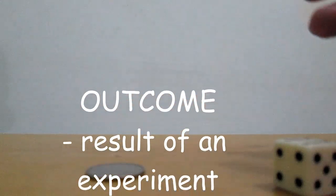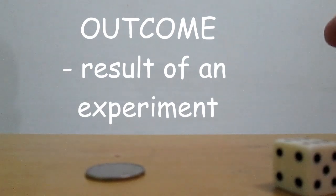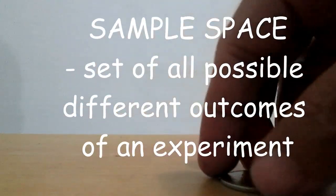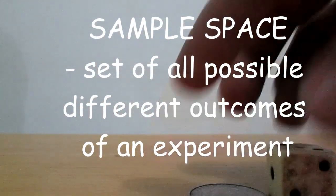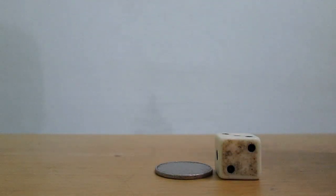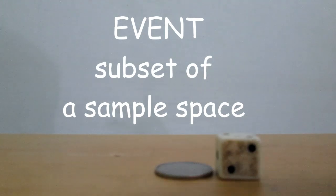Outcome is a result of an experiment. Sample space is a set of all possible different outcomes of an experiment. An event is a subset of a sample space of an experiment.